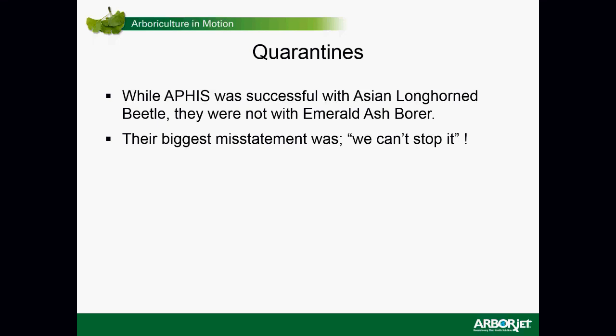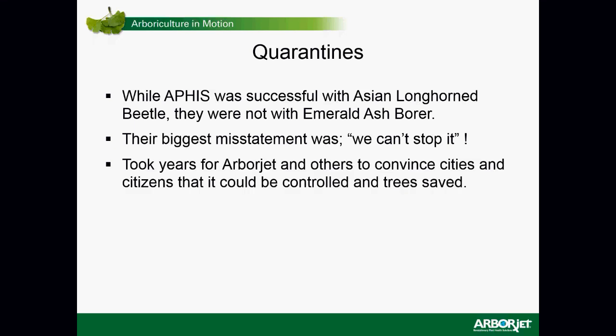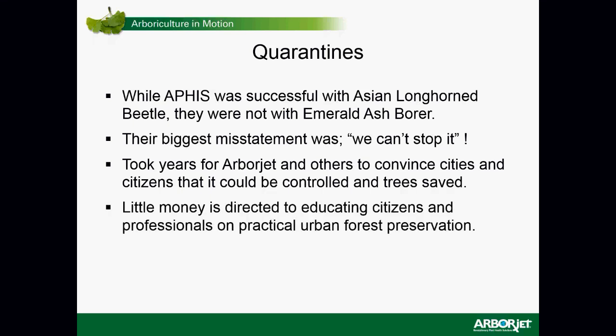While APHIS was successful with Asian longhorn beetle in each location where it appeared, they were not so with emerald ash borer. APHIS was actually in charge of EAB in the early years. They tried large-scale clear-cutting — often up to a mile to a mile and a half — of all trees in an area where it existed. Inevitably, emerald ash borer had moved beyond the clear-cut options. Having spent millions of dollars trying to eradicate it, they made a mistake when they said 'we can't stop it.' In a sense it was true — they couldn't stop it. But it took us years to convince cities and citizens that we actually could control emerald ash borer and the trees could be saved.